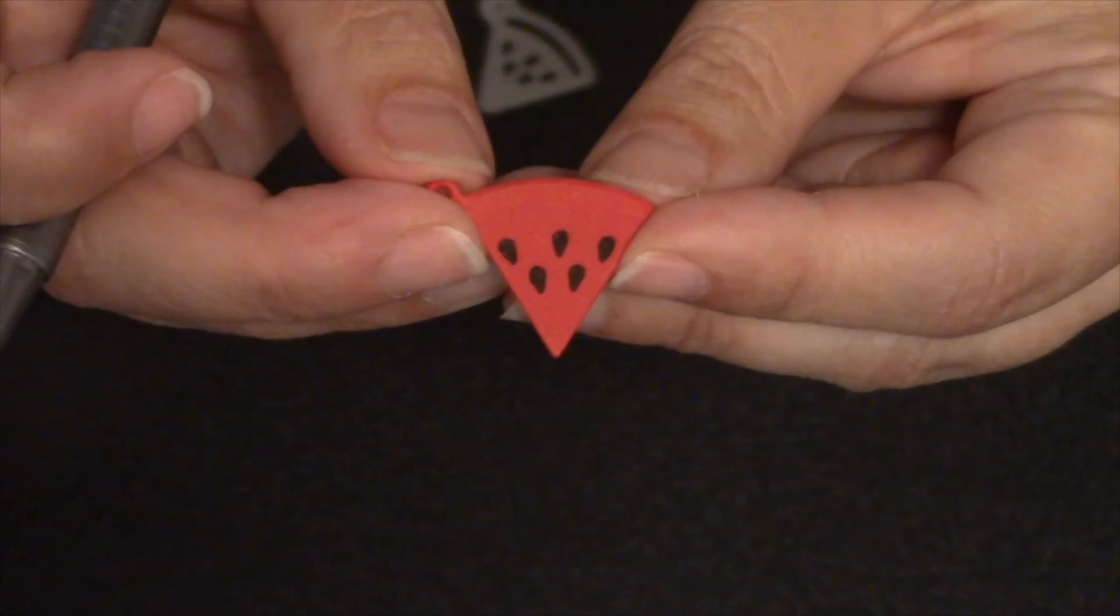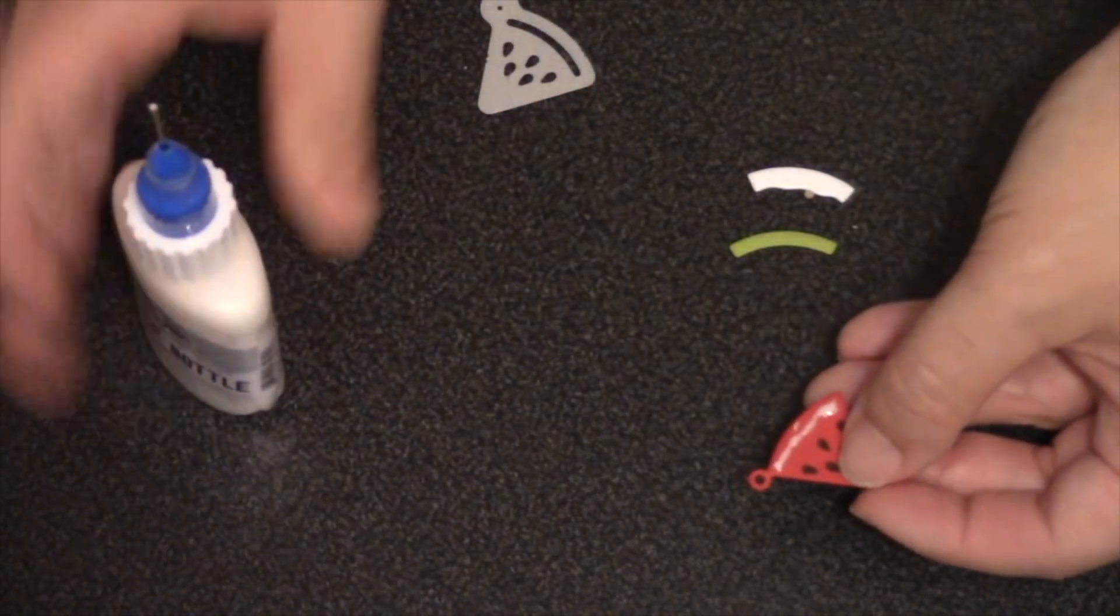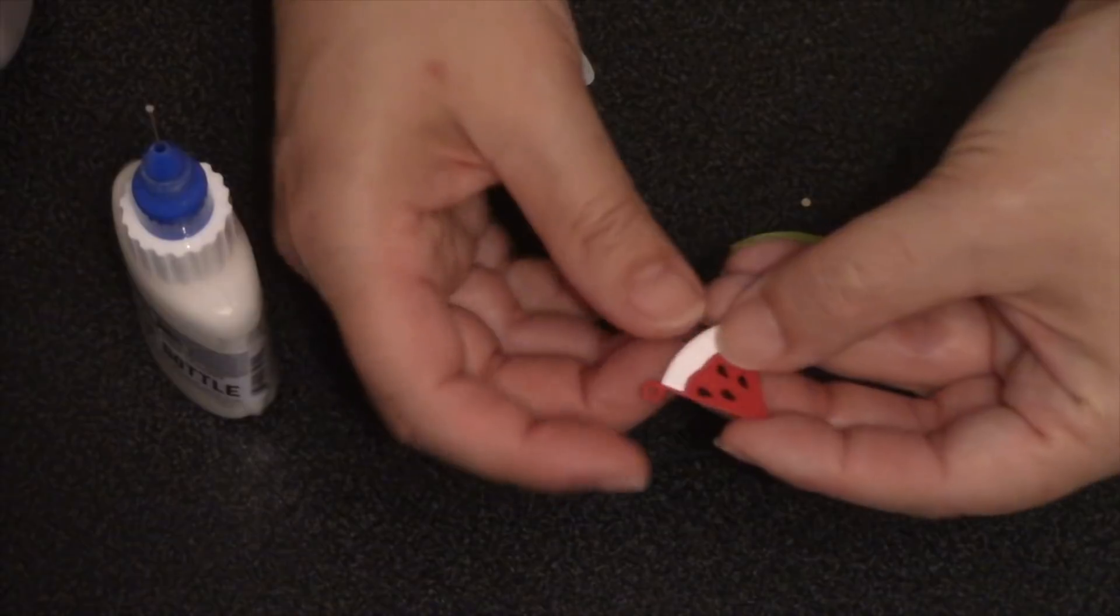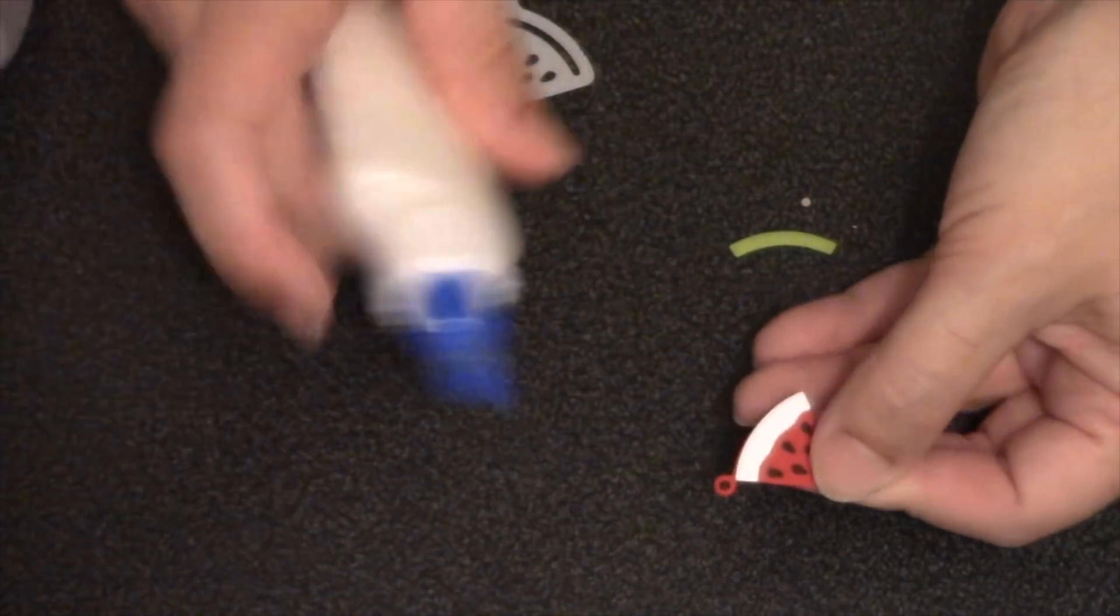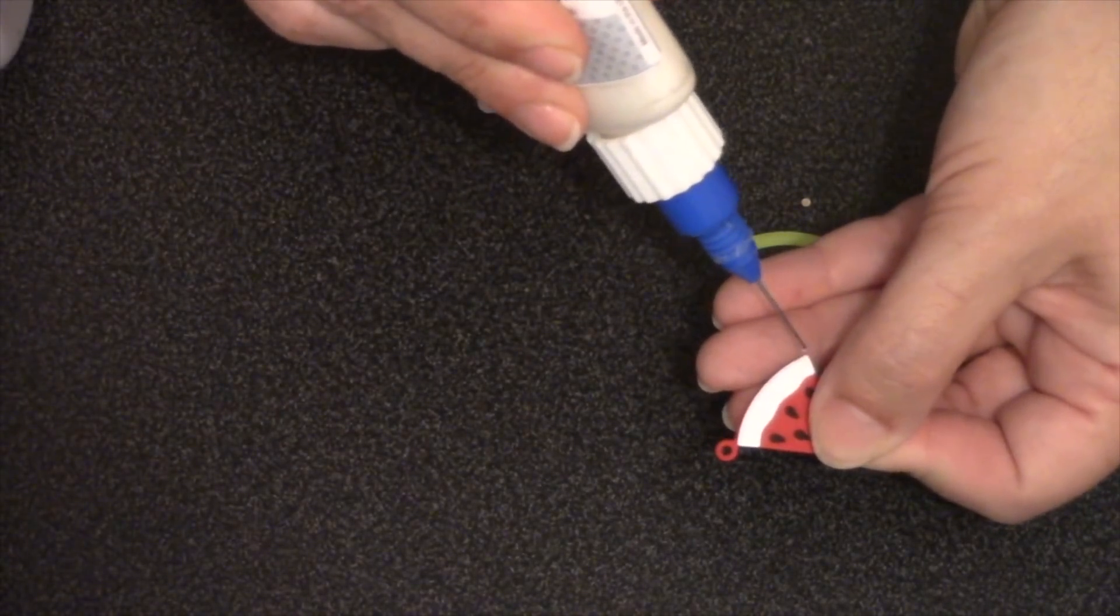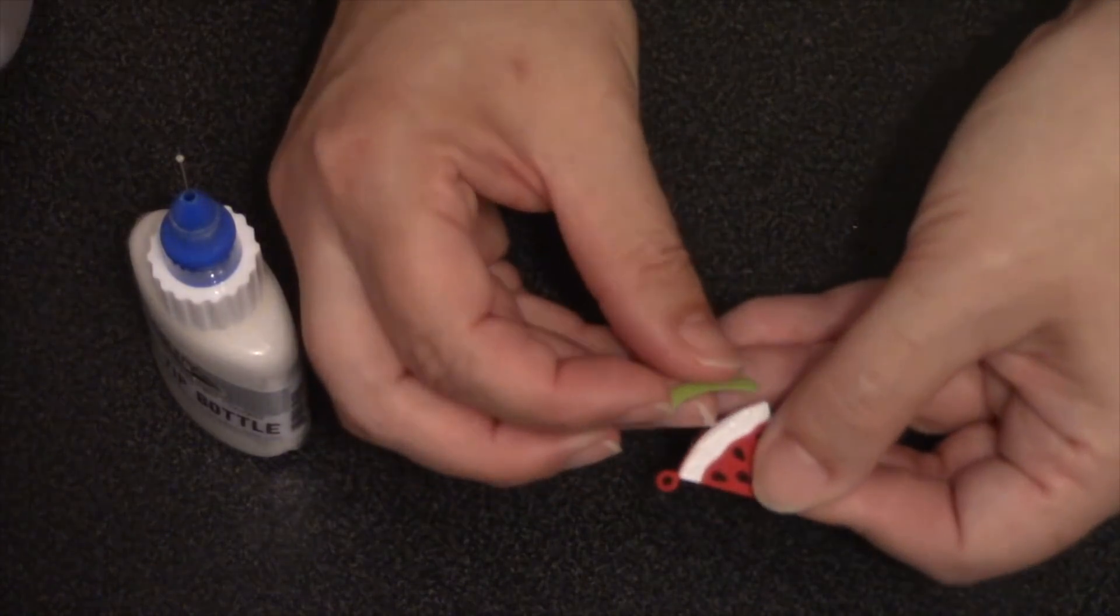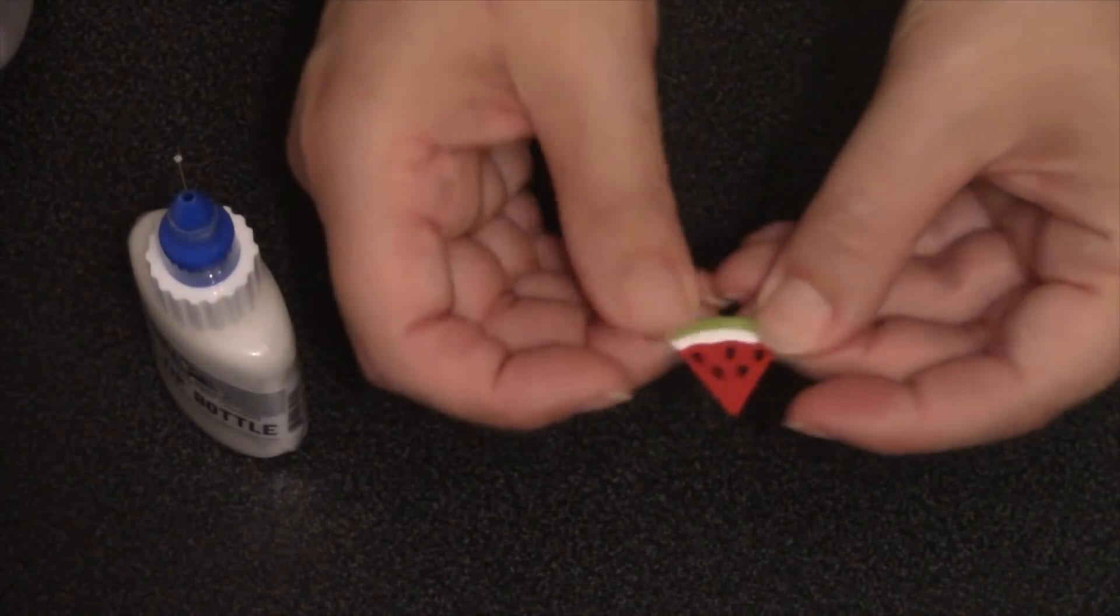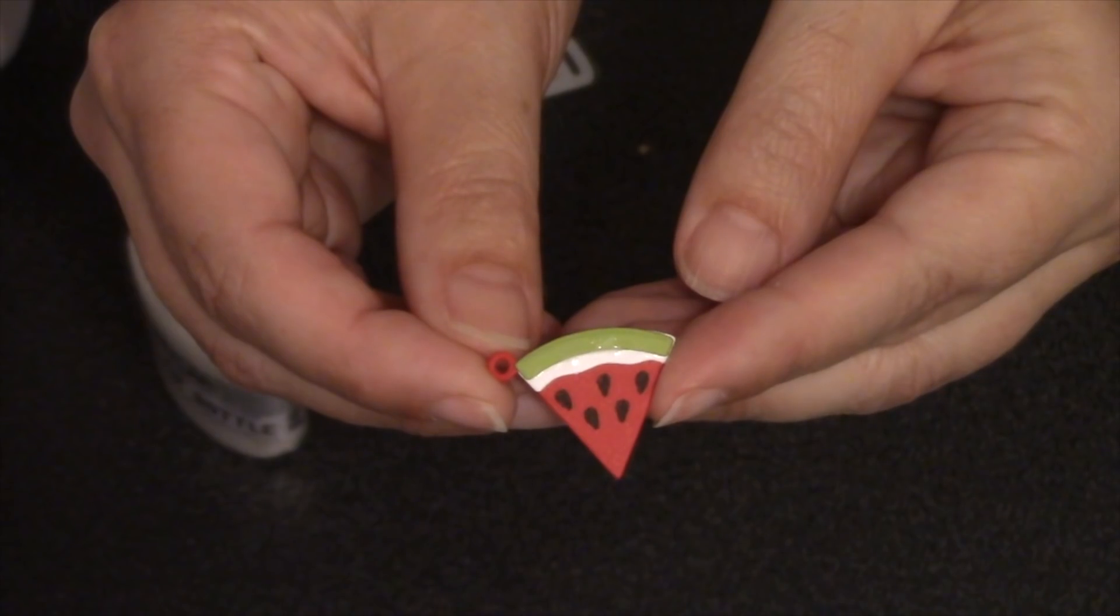And then to do the rind of the watermelon, there are two dies in the set that you layer together. You start with the white one so that one would go on first, just lining up with the outside curved edge. My favorite is to use glue for these small charms, and I am using my Lineco neutral pH adhesive. It's in my fine tip bottle and we do sell both of those items on our website. So now I'll add the green rind and again just lining it up with the curved edge. So then you get that double rind as well as some cool dimension to the charm.